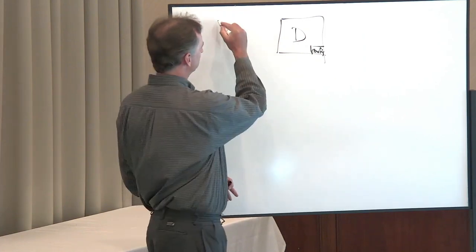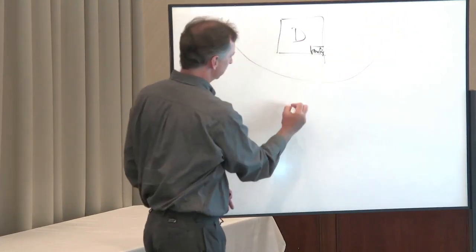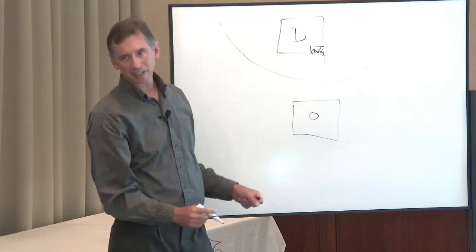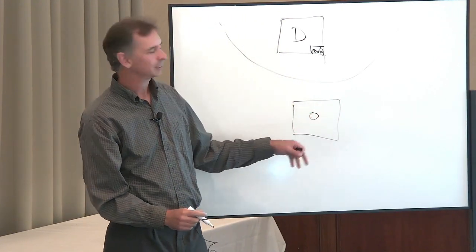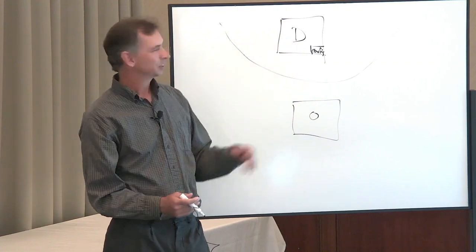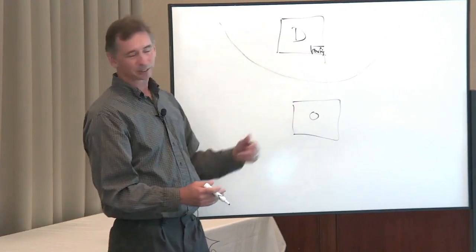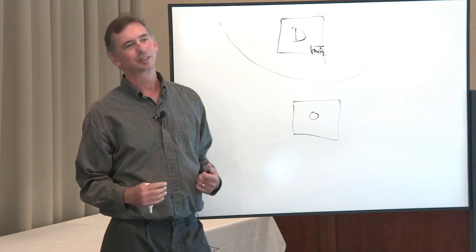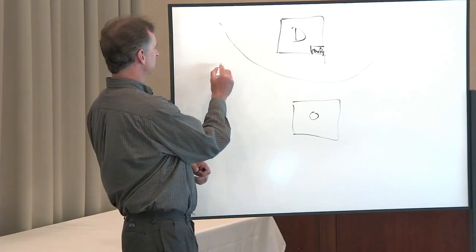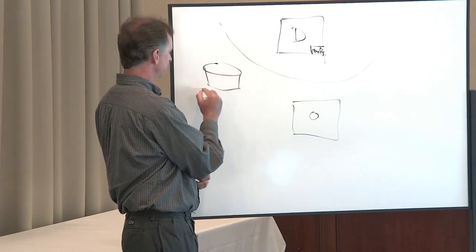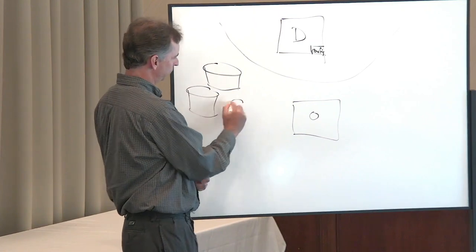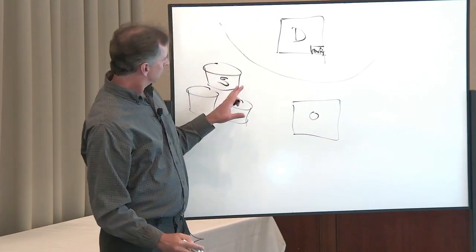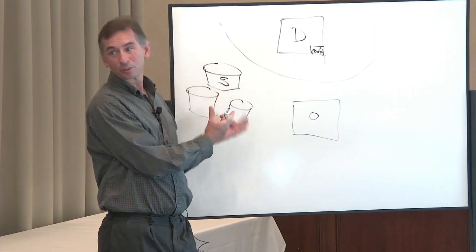The workhorse in the data center is the Observer. The Observer is a virtual appliance managed by the Director, delivered from the Director, and it does the watching of your storage — or the customer storage. We call these the sources: the source filers and the source shares. This is your primary storage.